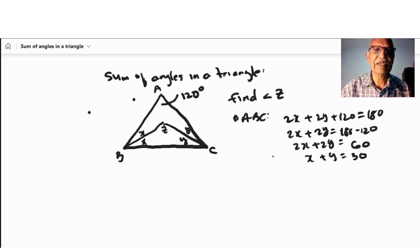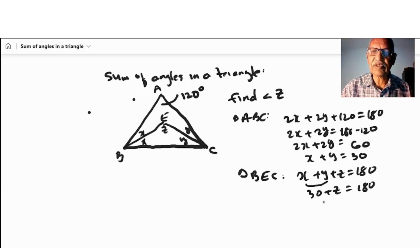Now if I see this is in triangle BAC, x plus y plus z equal to 180. But I know x plus y is already 30 degrees, so 30 plus z equal to 180. Therefore, z equal to 180 minus 30, which is 150 degrees. So simply we found angle z.